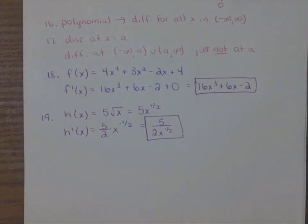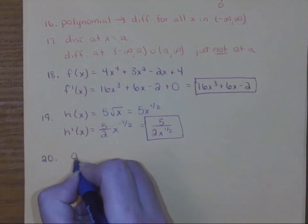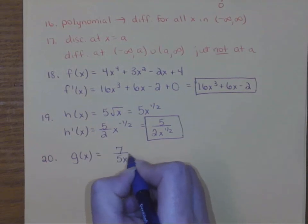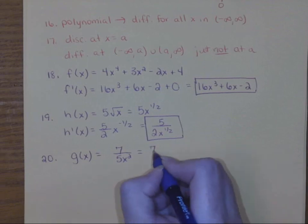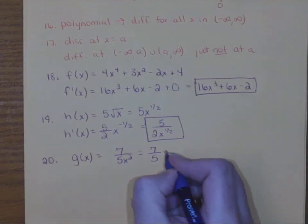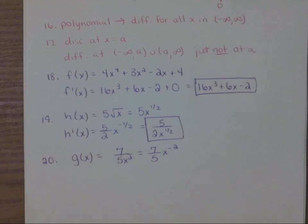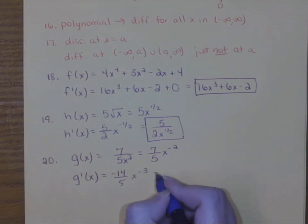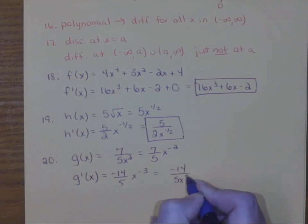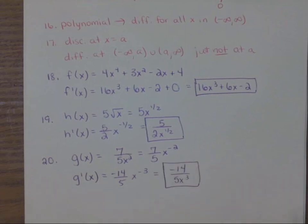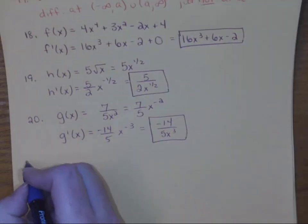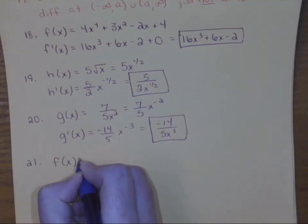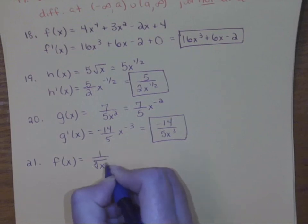Also notice when I was ready to take the derivative I said h prime of x — every time on your test I need to see that prime notation when you're doing a derivative, if it's appropriate. For number 20, g of x equals 7 over 5x squared. This is going to be 7 over 5 times x to the negative 2, so if you move the power out to the front you're going to get negative 14 fifths times x to the negative third, rewritten as a fraction.